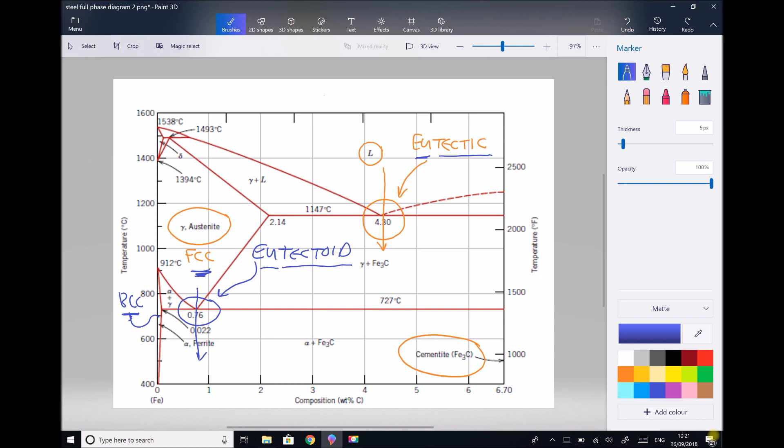The last thing to point out before we focus on this eutectoid point is that cementite is actually a ceramic. It's a very hard, very brittle material. In effect, we have soft iron combining with very hard cementite. So now let's focus on our eutectoid point.